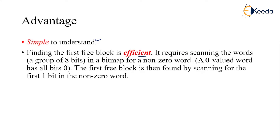Finding the first free block is efficient. It requires scanning of words — groups of 8 bits in the bitmap — for a non-zero word. We scan and because it's a bit vector, we group them in groups of 8 bits. We scan for a non-zero word in the bitmap.